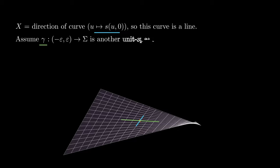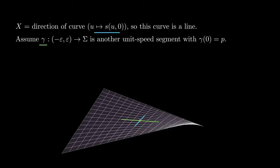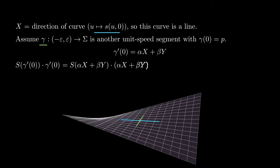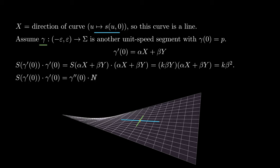To prove the second part, assume there is another line segment gamma containing sigma and passing through p. Of course, we can parameterize gamma by arc length. We then write gamma prime at zero in terms of x and y. Then the normal curvature of gamma at p equals beta squared times k. But the normal curvature of gamma can also be computed as the dot product between n and the acceleration of gamma, so this curvature is zero. By hypothesis, k is not zero at p, so beta is zero. This means that gamma is parallel to x, finishing the proof of the lemma.